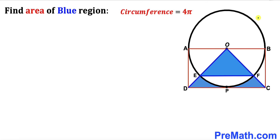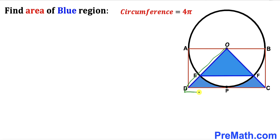Welcome to pre-math. In this video we have a circle with center O along with a red rectangle ABCD, such that point P is the point of tangency. As a result we get a smaller triangle OEF and a larger triangle ODC. The circumference of this circle has been given as 4π.